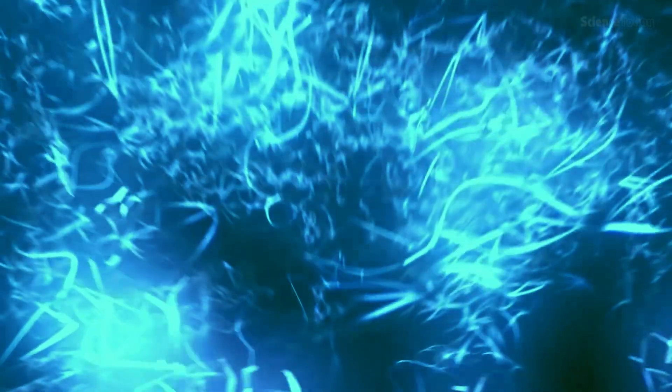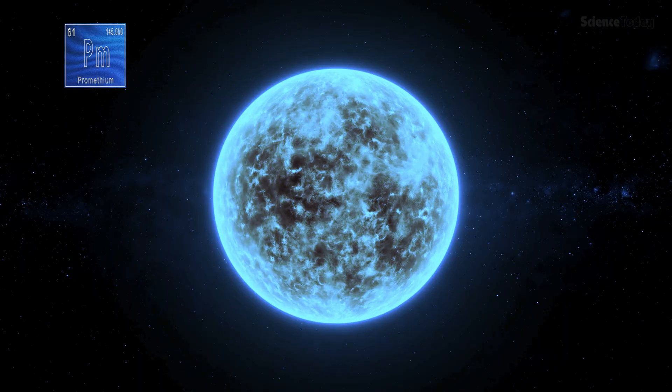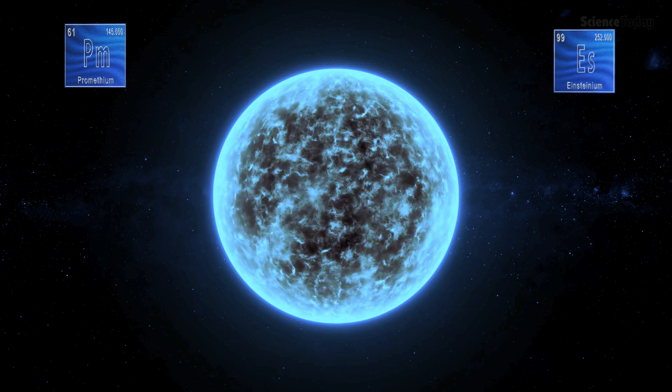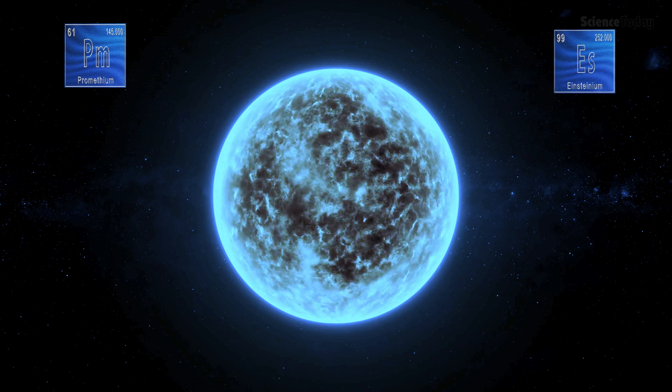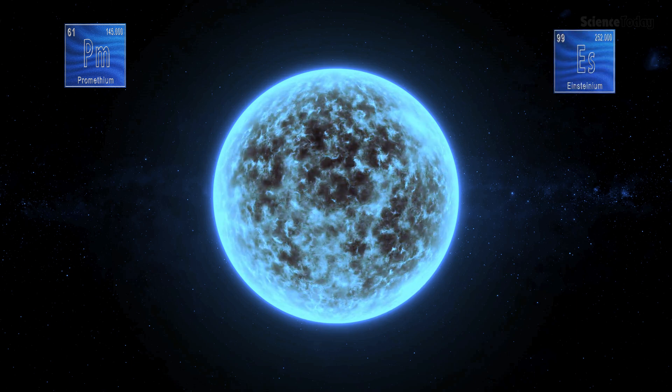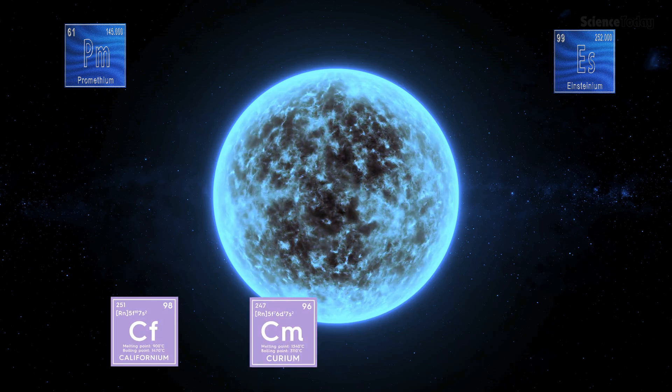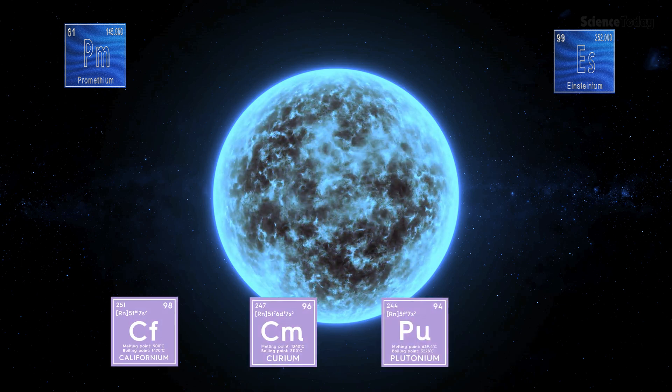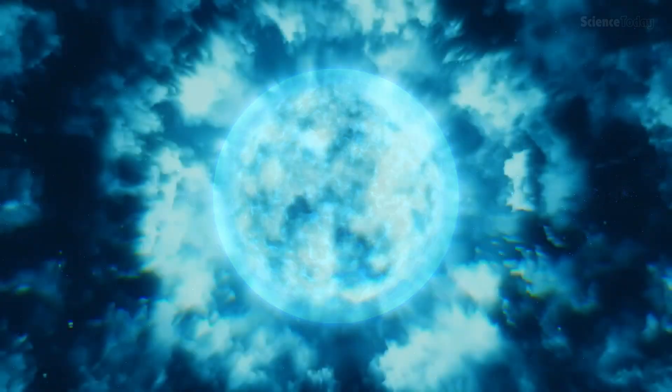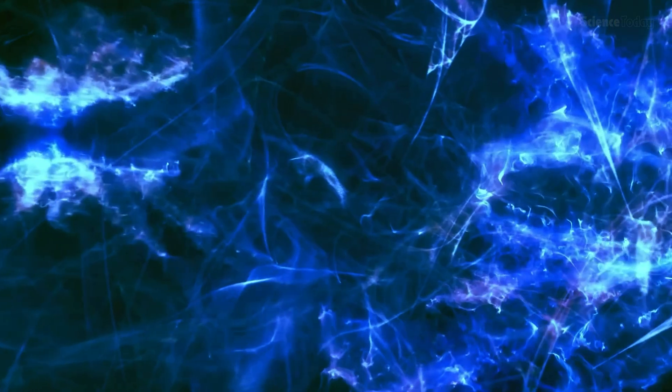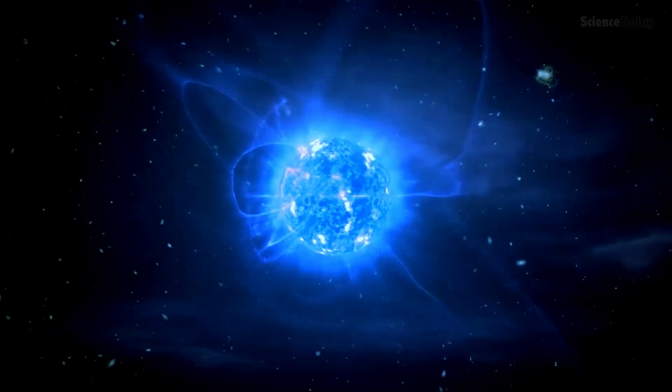The star's atmosphere contains a plethora of short-lived radioactive elements. These elements decay rapidly. Even if they existed billions of years ago, their short half-lives mean they should have completely vanished long before now.